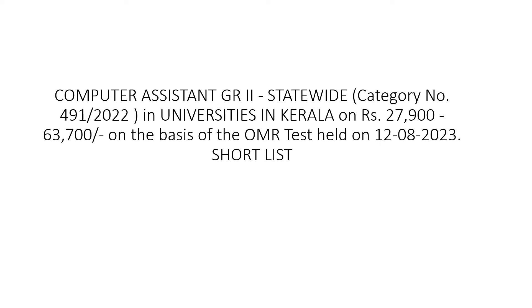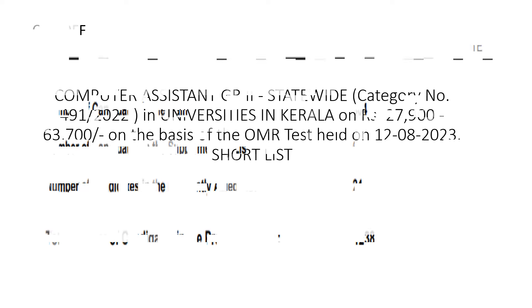The cut-off mark for Computer Assistant Grade 2 is 63 marks. The LD Typist also has a shortlist. Number of candidates in the main list is 604.